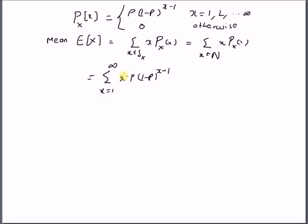Note that this function has value only for x equal to any natural number and it is 0 for all other real values. We also note that the probability value p always lies between 0 and 1.